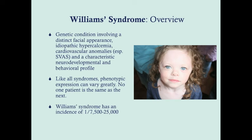Williams syndrome involves a defect — usually a deletion of the long arm of chromosome 7 — and that deletion can be of various lengths. This region codes for about 25 different genes. Out of our approximately 20,000 genes, 25 isn't a whole lot, but you can see how varying presentations and severities arise based on how much of this region is actually deleted.